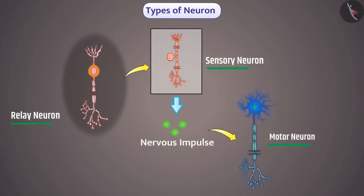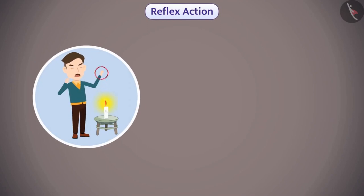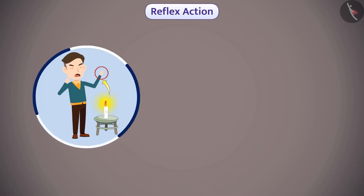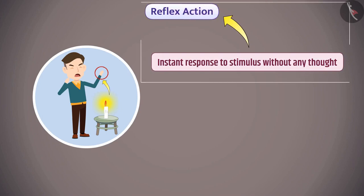Now let's understand how these neurons work together. Reflex action: if you touch a hot object accidentally, the organ of touch gets pulled back immediately. Such an instant response to a stimulus without any thought is called a reflex action. These actions happen to protect the organ or body.